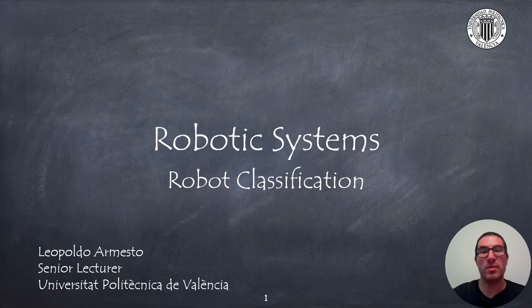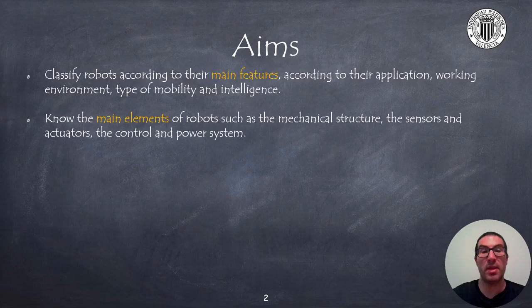The aims of the presentation are, on the one hand, to classify robots according to their main features such as the type of application for which they have been designed, the working environment, their mobility, and their level of intelligence. In addition to this, I will also present the main elements that make a robot different from each other, such as the mechanical structure, the type of sensors and actuators they have, as well as their control and power supply.